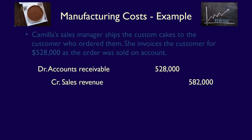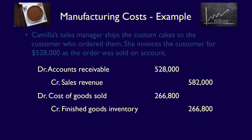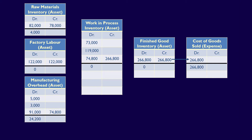Camilla's sales manager ships the custom cakes to the customer and invoices them $528,000, as the order was sold on account. The entry to record the sale is a debit to accounts receivable of $528,000 and a credit to sales revenue for the same amount. We also have to record the cost entry: debit cost of goods sold and credit finished goods inventory for $266,800. Flowing through the T-accounts, we credit finished goods inventory for $266,800 and debit cost of goods sold — an expense account on the income statement tracking the cost of inventory sold to earn revenue.